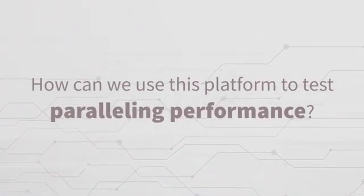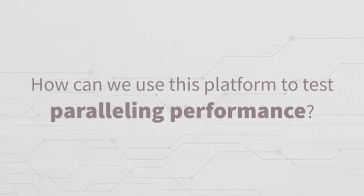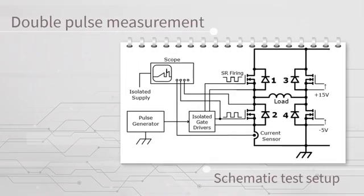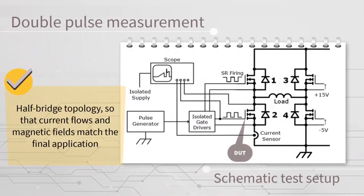So, how can we use this platform to test the paralleling performance? A double pulse test setup with an H-bridge topology is used. An H-bridge is employed so that current flows and magnetic fields match the final application.